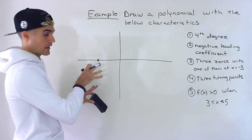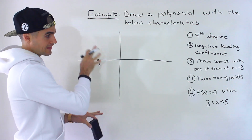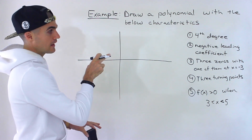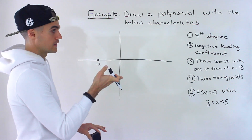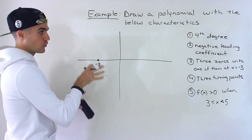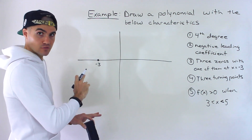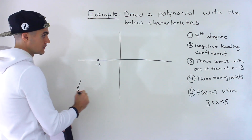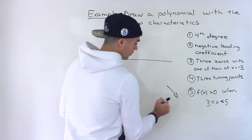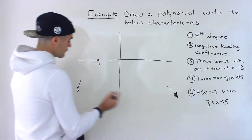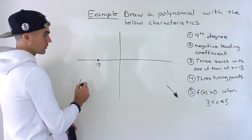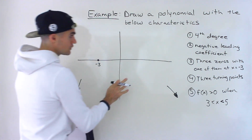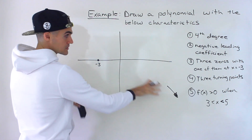After I plot any points that have to be on the graph for sure, then I go through the characteristics. Notice that number one, we're told it's a fourth degree, and number two, we're told it has a negative leading coefficient. Now if a polynomial has a fourth degree and a negative leading coefficient, then we know the end behaviors — it starts over here and ultimately ends over here. If it had a positive leading coefficient and an even degree, it would start here and end here. But with an even degree and negative leading coefficient, this is how it's going to end up.